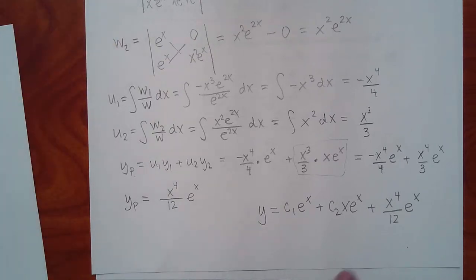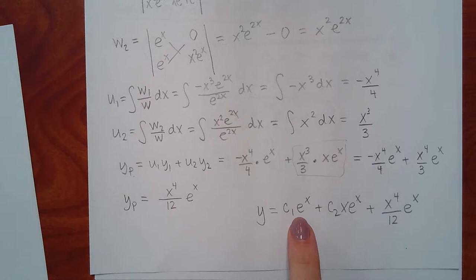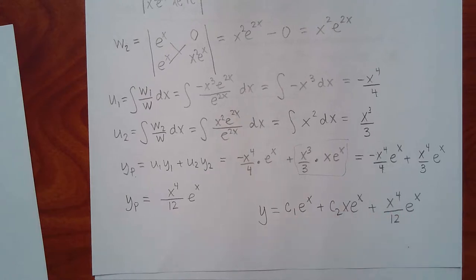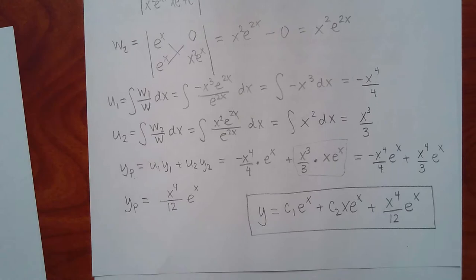Make sure none of these are like terms. If they were, you'd combine them. x to the fourth over 12 times e to the x is not like the other terms, so this is the full simplified solution. If you do have like terms in the final answer and put them over without simplifying, points might be deducted. Just check and combine if necessary.